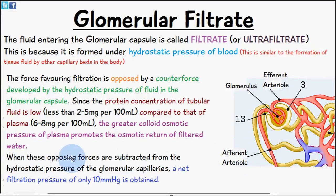When these opposing forces are subtracted from the hydrostatic pressure of the glomerular capillaries, there's a net filtration pressure of only about 10 millimeters of mercury and that's the one that's measured.